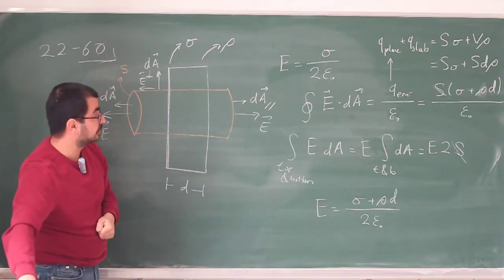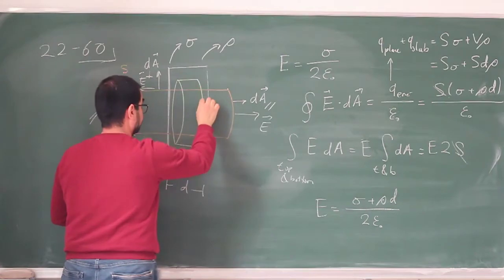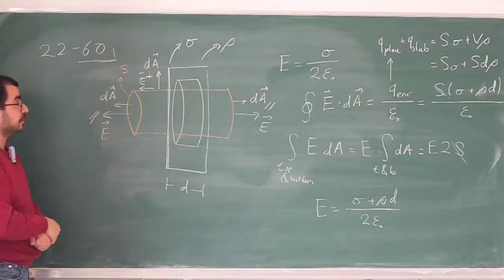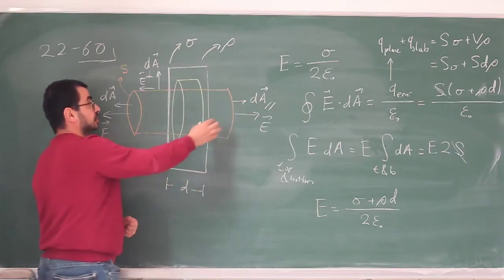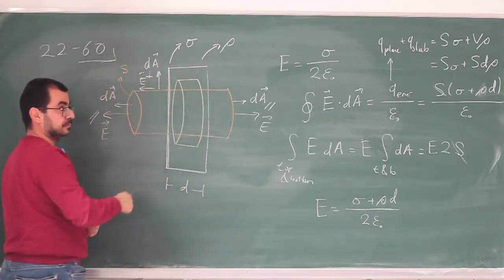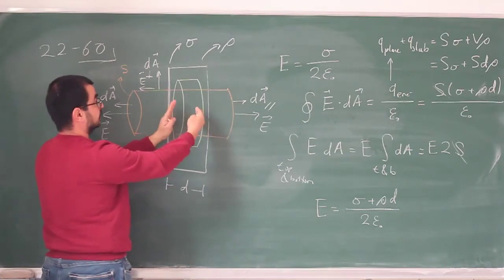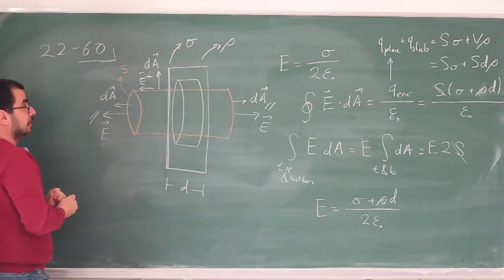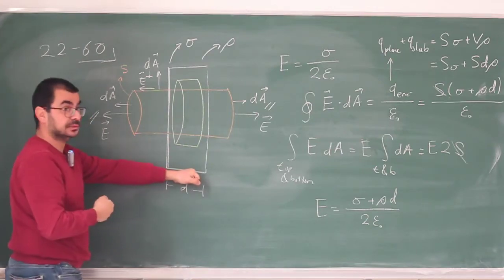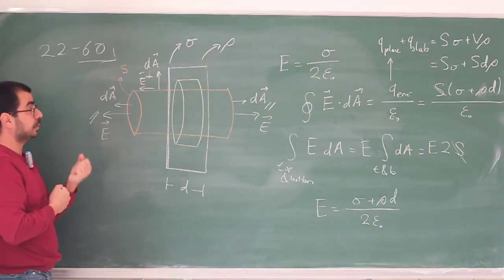The hard way would be to choose another Gaussian surface where the faces are equidistant from the slab's center, and then use superposition — computing the electric field from the plate separately, and the electric field from the charge distribution inside the slab using a symmetric Gaussian surface. You first forget about the plate, and then it becomes reflectionally symmetric. You add those up using superposition. But this is a little bit hard — I'm not going to do it that way.